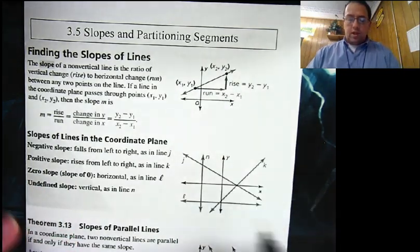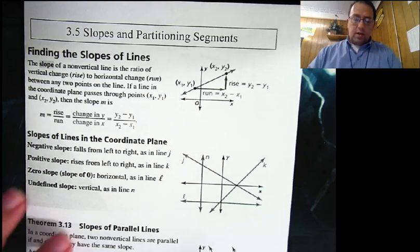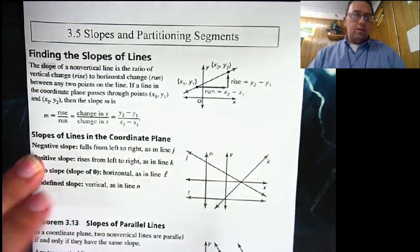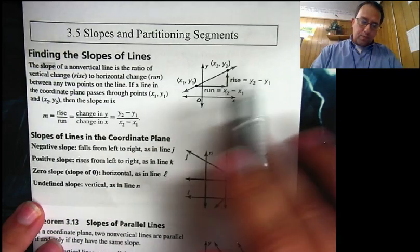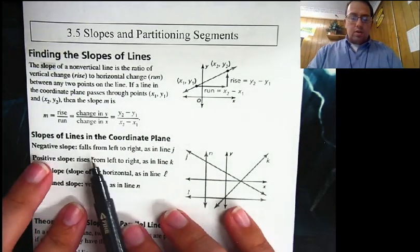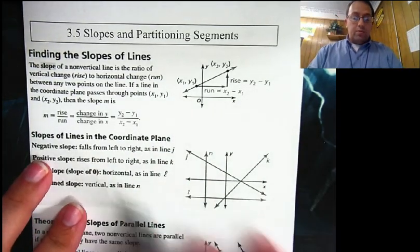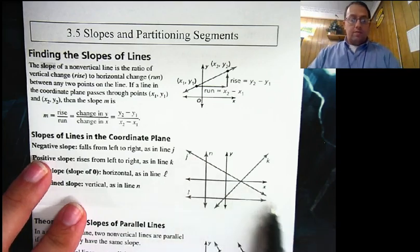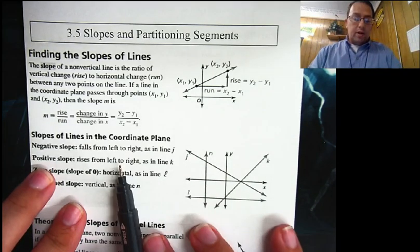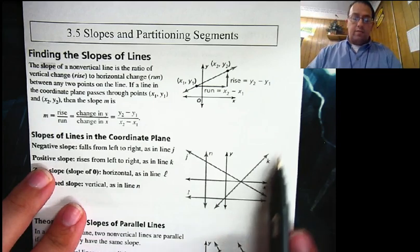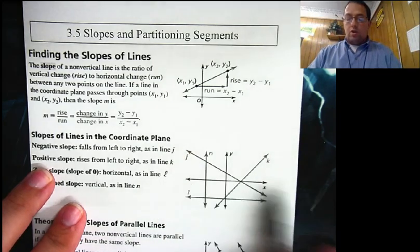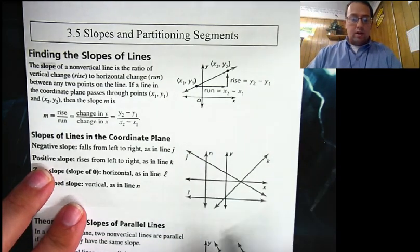Same direction you read — unless you're reading ranger. But always go from the left to the right. Now, a couple of things. Negative slope is going to fall from left to right, as we have in line j. Positive slope rises from left to right, as in line k. Always going left to right.